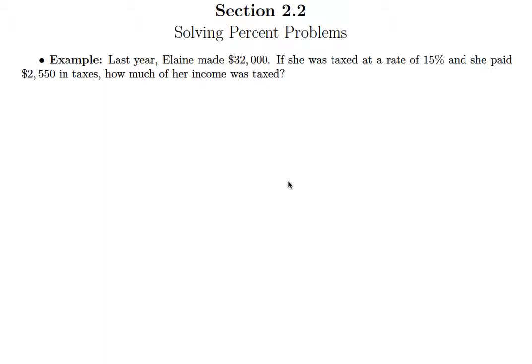So this is a problem that has what we call a distractor. And the distractor here is this $32,000. You could actually answer the question without knowing that she made $32,000. So it's there to kind of distract you and make you think you have to use it somehow. But it's not really pertinent because what we want to know is essentially 15% of what number is $2,550.